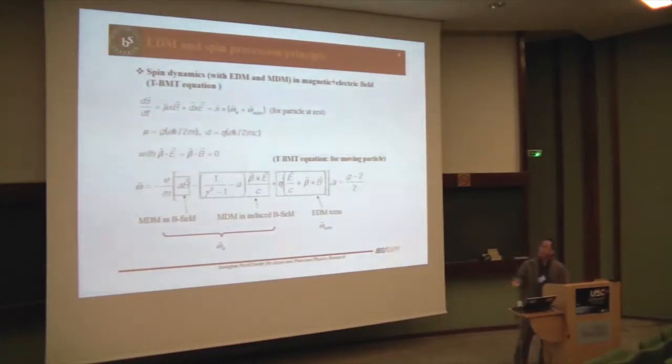Okay, let me explain how you can use the storage ring. This is called Thomas BMT equation. That explains to you when the spin is put in the both magnetic field and electric field, then the spin precession frequency is described in this formula. It looks quite complicated, but you can make this formula very simple. For example, if you don't want to use magnetic field, then B field terms goes away. The two terms goes away.